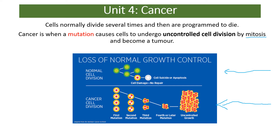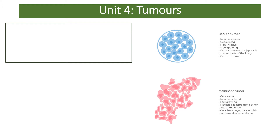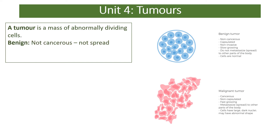What is the difference between a tumour and cancer? A tumour is a mass of abnormally dividing cells. If it is benign, it is not cancerous and has not spread — it is in one part of your body and therefore less likely to cause any damage.